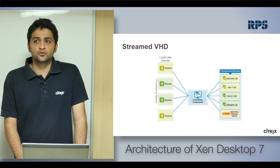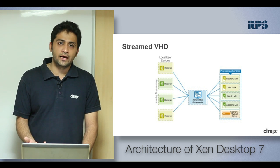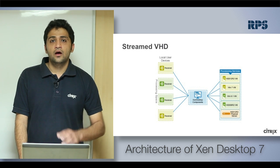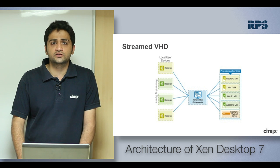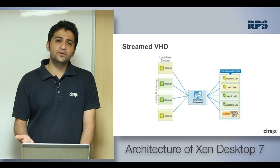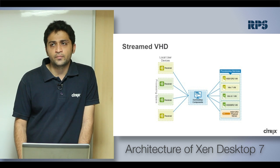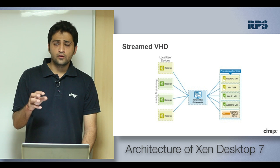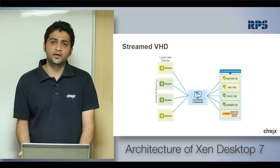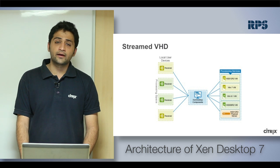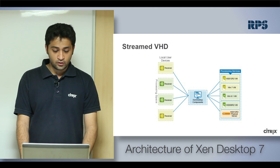You can do streamed VHDs using Provisioning Services, which have been around for quite a long time. You can create vDisks for 2012 R2, 2008 R2, or any operating system and stream that vDisk to end user machines or virtual machines. Users can connect to those virtual machines without needing an operating system installed on each machine. You just create one vDisk — the user powers on and gets an operating system streamed in real time, giving great flexibility to the administration team.